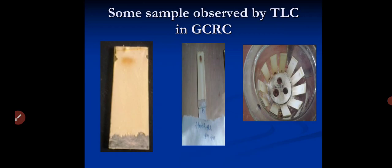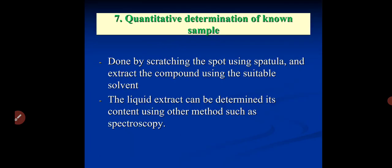In this diagram we explain that component A is more polar and component B is less polar for this type of solvent. Here you see some practicals done by the students in our MSc final laboratories at GCRC Government Dunger College, which is A grade by UGC NAAC in third consecutive cycle. Now we discuss quantitative determination of the known sample, done by scraping the spot using spatula and extract the compound using suitable solvent for the solid separation. The liquid extract can be determined using other methods such as spectroscopy.